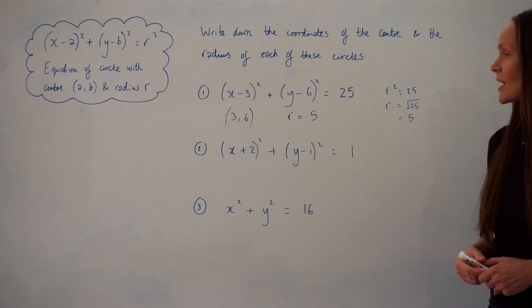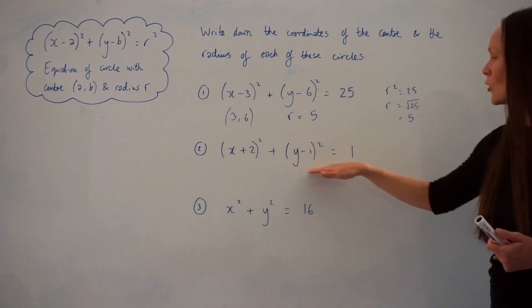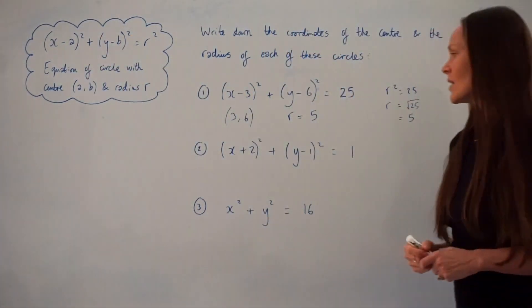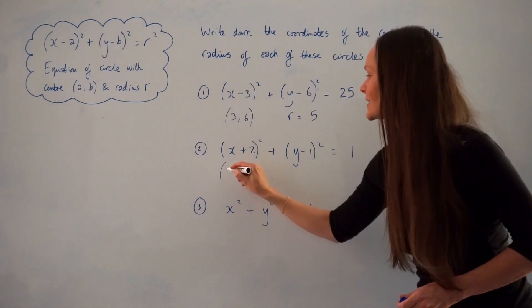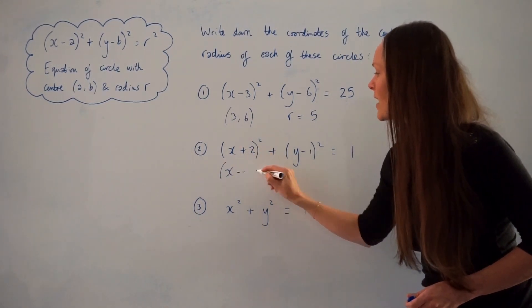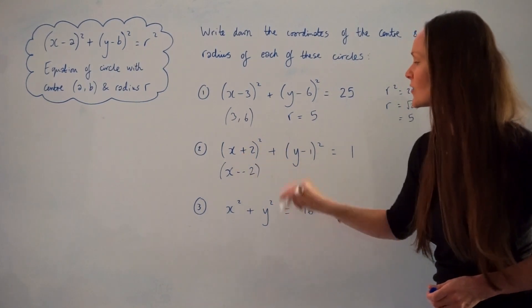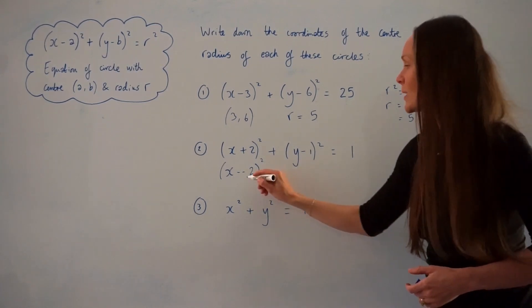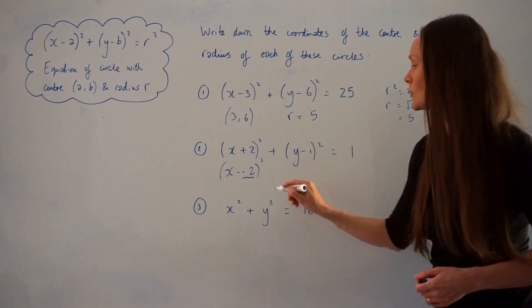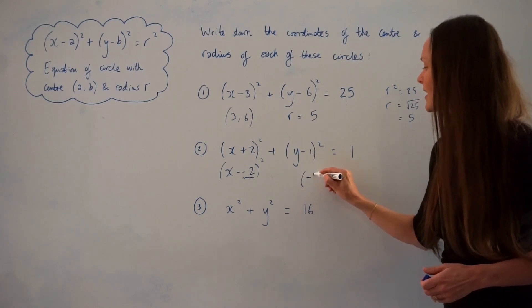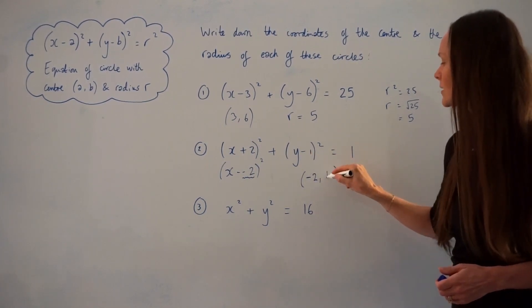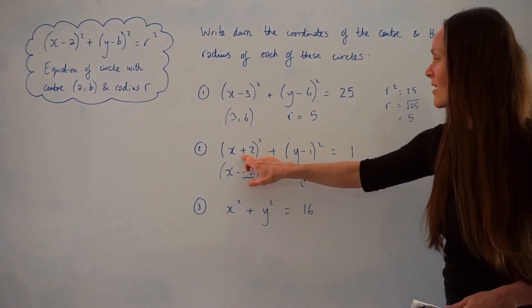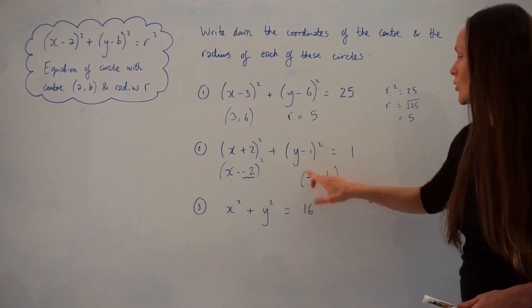In number 2, when we look at the equation, it's not written quite the same way as the one with the negative signs. If we were to put a negative sign here, we would have to put another negative, because two negatives make a plus. So this time, when you write down the x-coordinate for the centre of the circle, it would be negative 2, so it lies at negative 2 and then positive 1. An easy way to remember it is that it's this number but the opposite sign when looking at the centre coordinates.